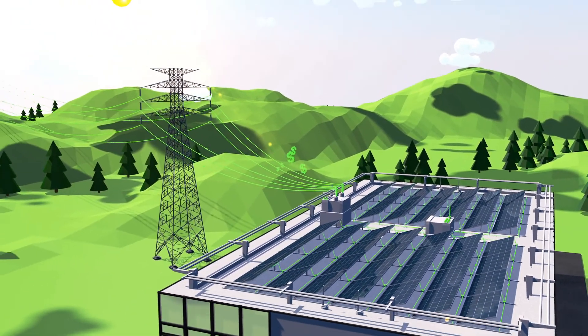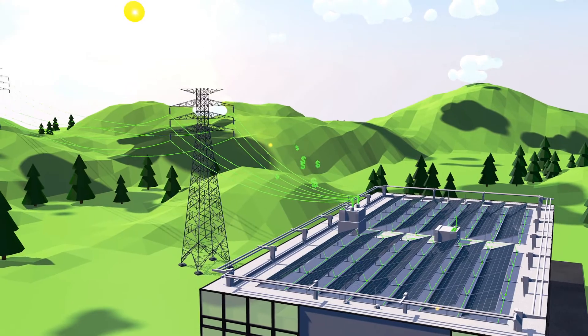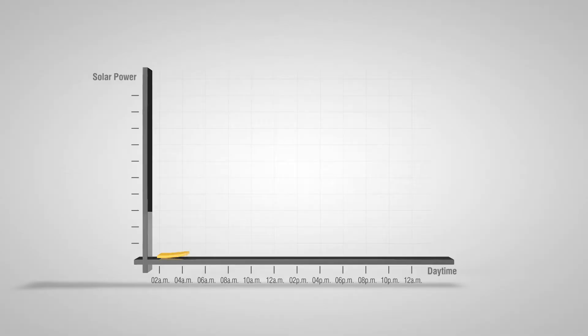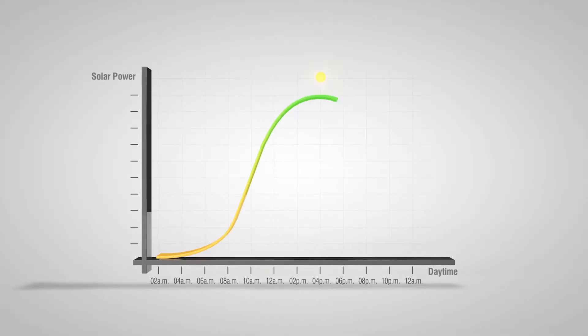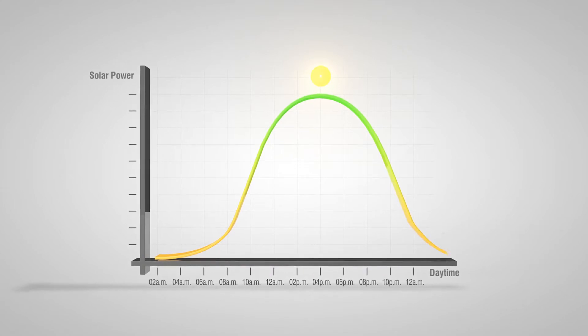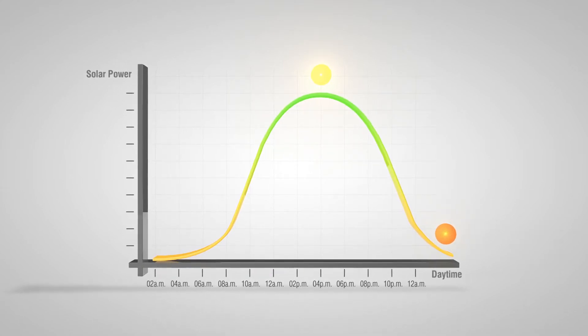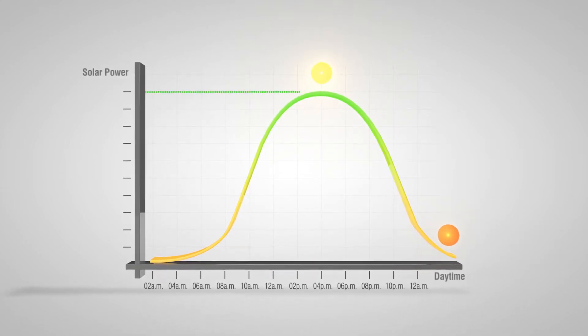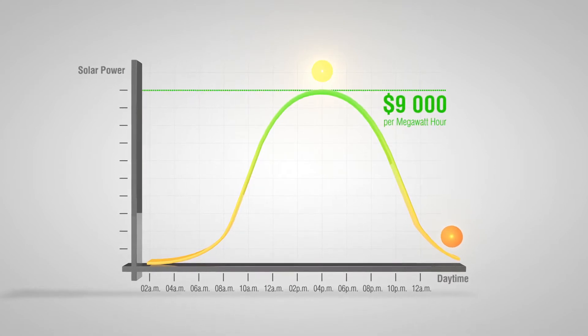MP2 will sell any excess solar generation to the grid at the real-time pricing. Think about it. Solar produces energy during the hottest, sunniest hours which are also some of the most expensive hours of the day to purchase energy. It can go as high as $9,000 per megawatt hour.